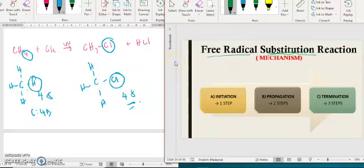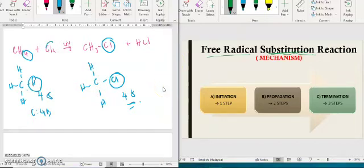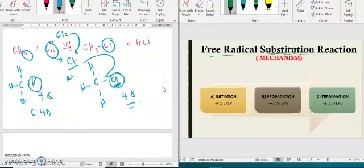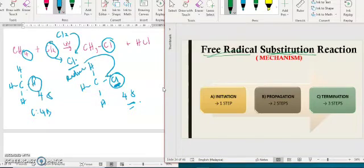Kenapa nama dia free radical? Because the Cl atom will turn to radical atom and then it will substitute at this atom. So yang disubstitutukan bukanlah Cl2 tapi yang kita substitutukan adalah Cl radical. That's why the name is free radical substitution reactions.